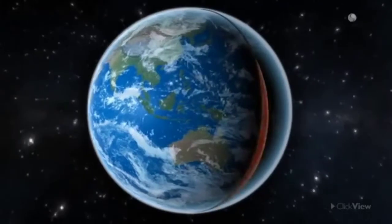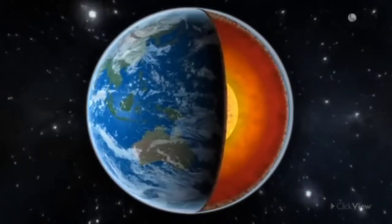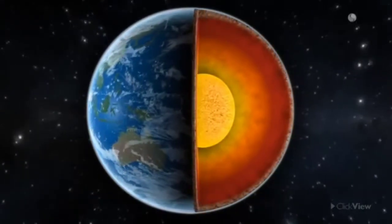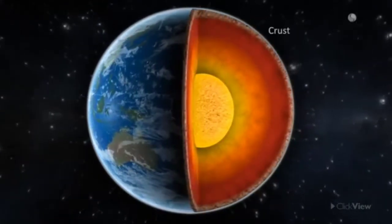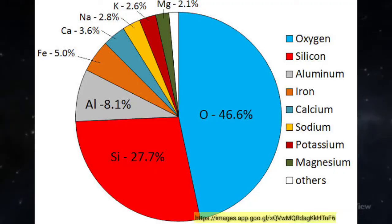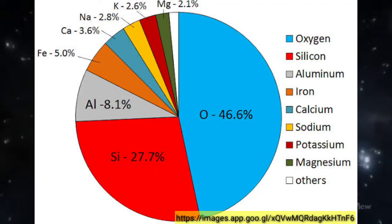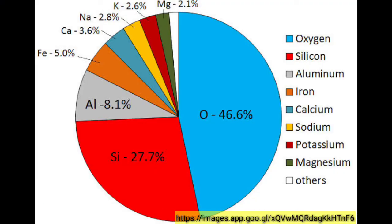Magmas can vary widely in composition, but in general, they are made up of only eight elements. In order of importance: oxygen, silicon, aluminum, iron, calcium, sodium, potassium, and magnesium. Oxygen, the most abundant element in magma, comprises a little less than half the total, followed by silicon at just over one quarter, and the remaining elements, as shown in the graph.